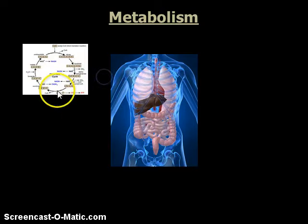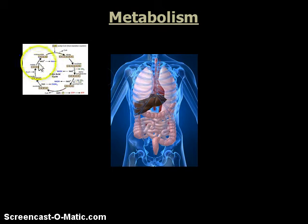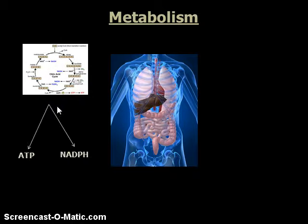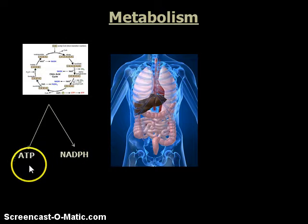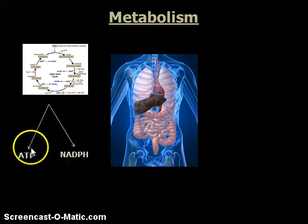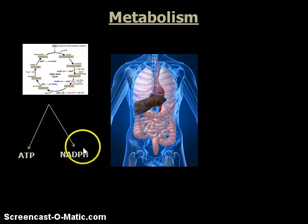Biological processes like the citric acid cycle — this is the one where heterotrophs or consumers take organic carbon and cycle it around to produce energy-producing molecules like ATP and NADPH. You should have seen these terms, these molecules, at least once before. I don't want you to know what they stand for, but know that they're energy molecules.